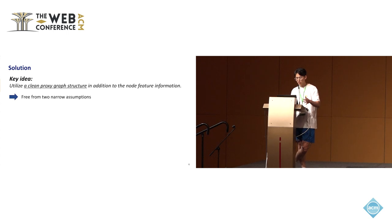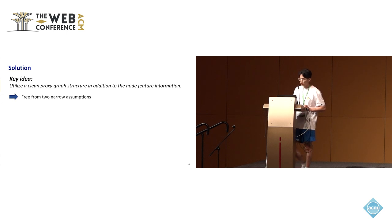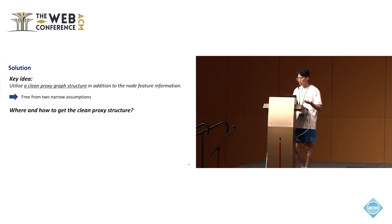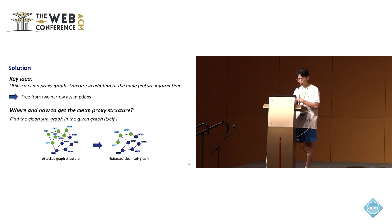To mitigate such narrow assumptions, we propose a novel approach utilizing a clean proxy structure instead of the attacked graph structure, in addition to node feature information, so that we are free from the previous two narrow assumptions. The next challenge is where and how to get the clean proxy structure. To this end, we find the clean subgraph in the given graph itself.